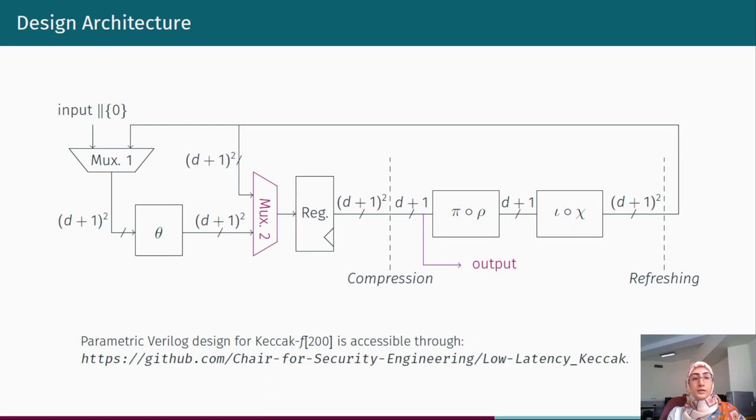Here is our final design architecture for low latency DOM implementation of Keccak. We have instantiated another multiplexer, identified as multiplexer 2, which bypasses theta step and allows us to take the outputs of the last round directly from the compression layer. Which turns the number of output shares back to d plus 1 instead of d plus 1 to the power of 2, which is produced by Chi function.